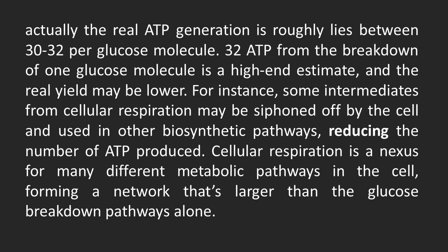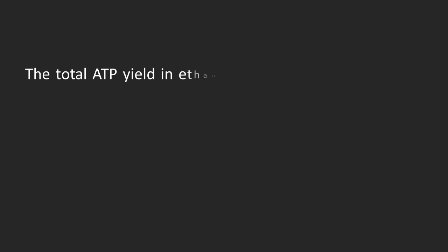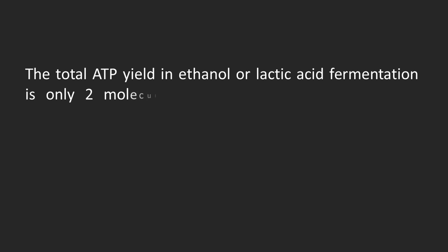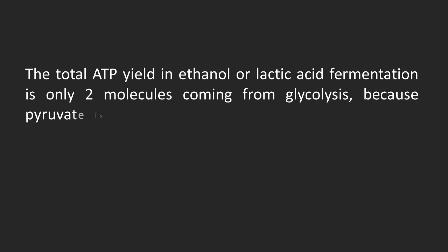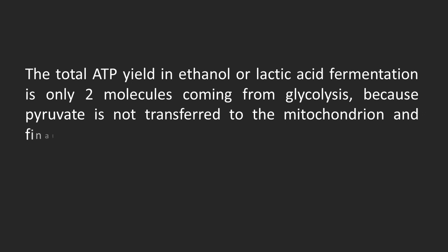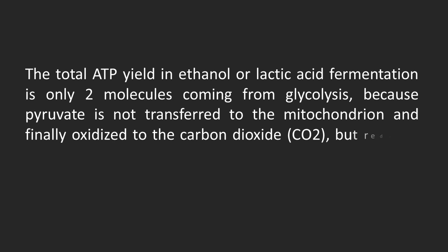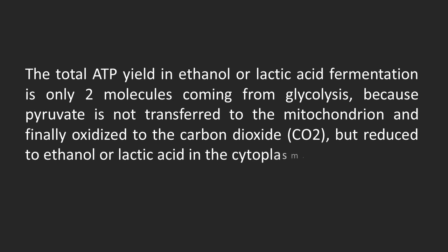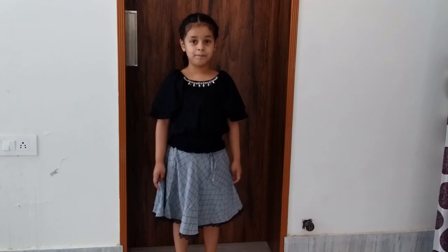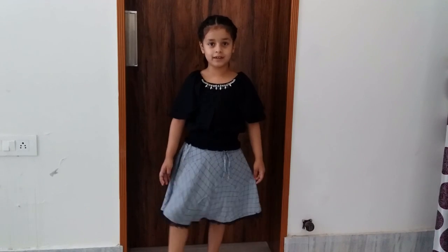The total ATP yield in ethanol or lactic acid fermentation is only 2 molecules coming from glycolysis, because pyruvate is not transferred to mitochondria for further oxidation but is instead reduced to ethanol or lactic acid in the cytoplasm. In the next video, we will learn about beta oxidation of fats. Thank you so much for watching — please press the like button.